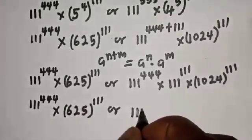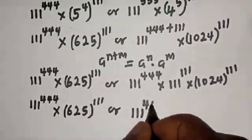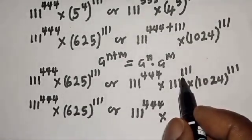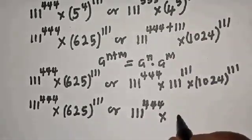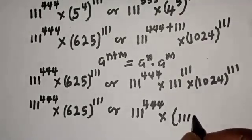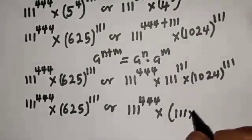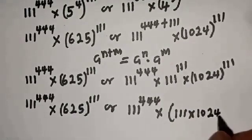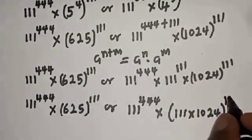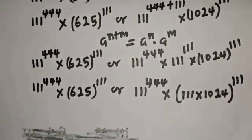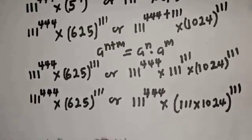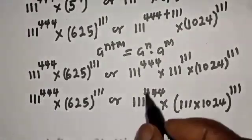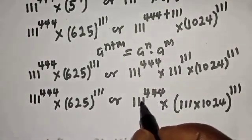From here, both sides share the common factor 111 raised to power 444, so we can ignore it. The comparison reduces to: 625 raised to power 111 versus 1024 raised to power 111. Since both have the same exponent 111, we simply compare the bases: 625 versus 1024.